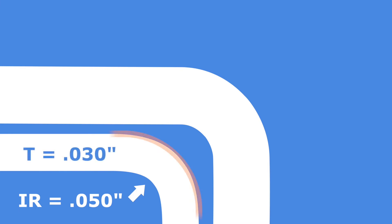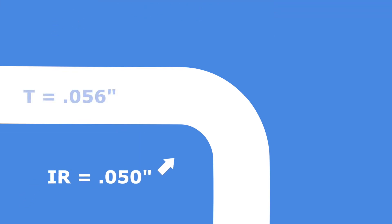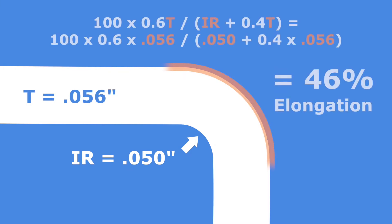These formulae also indicate the importance of understanding the role that metal thickness has on the amount of stretching that occurs on the outer area of a bend. For example, consider two metal thicknesses, each of which is bent to an inner radius of 0.050 inches. When working with 0.030 inch pre-painted metal, the elongation is 36%. If 0.056 inch metal were used in place of 0.030 inch material, the percent elongation of the coating is 46%. Thicker metal will undergo more stretching than thinner metal at the same inner radius.